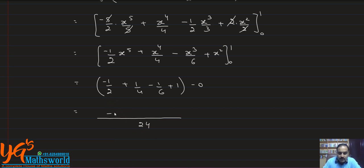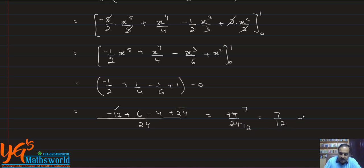Taking LCM as 24: −12 + 6 − 4 + 24 all over 24. That gives (24 − 12 + 6 − 4)/24 = 14/24, which simplifies to 7/12. So the final answer is 7/12. Hope it is clear.